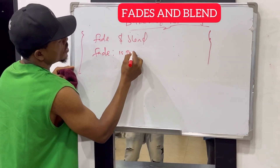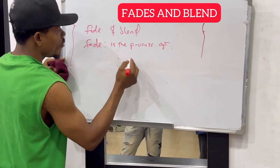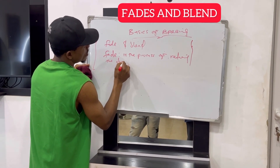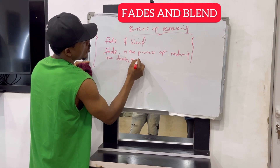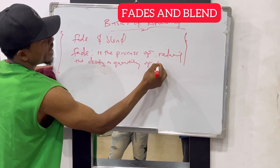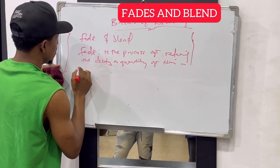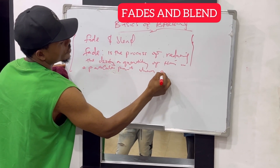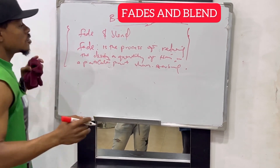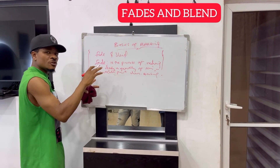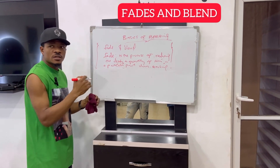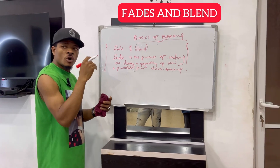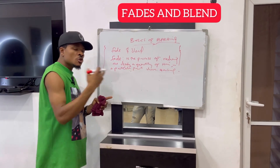Fade is the process of reducing the density or quantity of hair in a particular part. You fade, you reduce — as the name implies, fade. When you drop the thickness of anything, that is fade. When you drop the quantity of anything, that is fade.